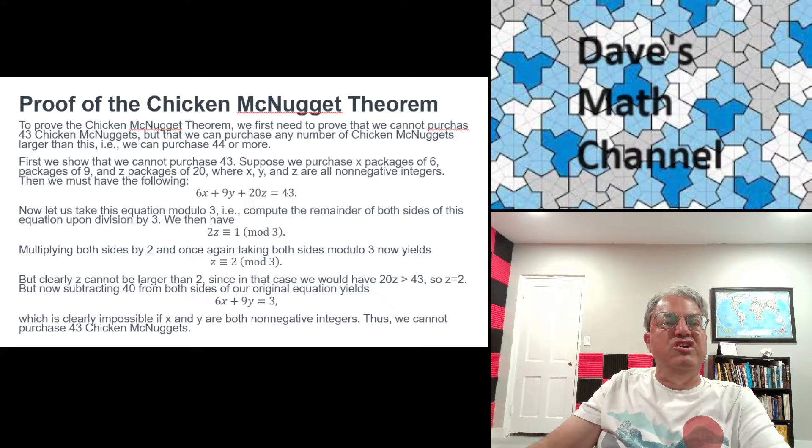Remainder upon division of 20 by 3 is 2. So you get 2Z has to be what they call congruent to 1 mod 3. What that means is that if you divide 2Z by 3 and 1 by 3, you get the same remainder. But 2Z has to be 1 more than a multiple of 3. And it's not too hard to see that if you multiply both sides of this equation by 2,